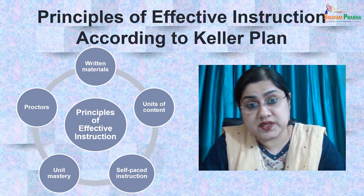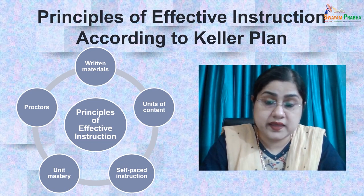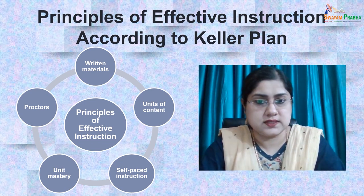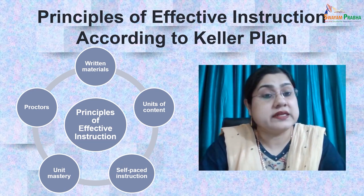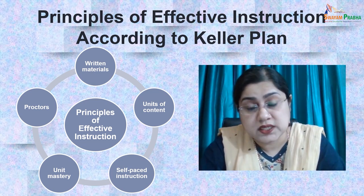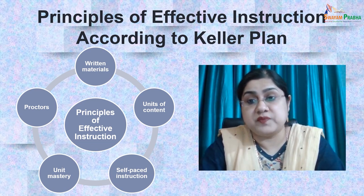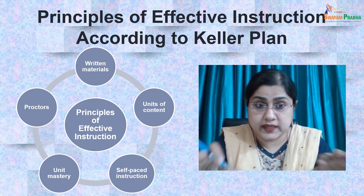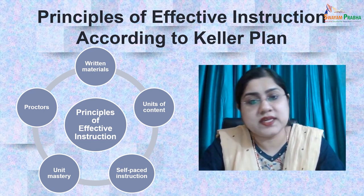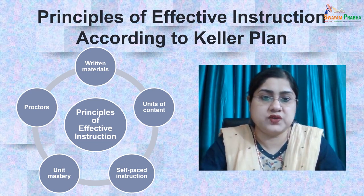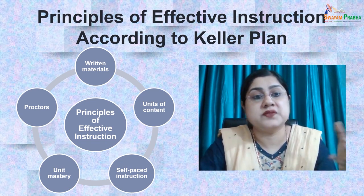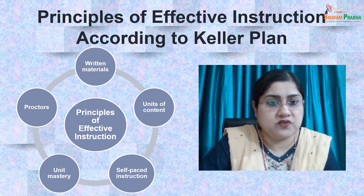According to the Keller plan, effective instruction should incorporate certain principles. There are five principles of the personalized system of instruction. The first principle is the principle of written materials — the primary presentation of new content should be through written text. At the time the Keller plan was developed, various media were available: lectures, movies, audio recordings, television, radio, and printed text. The paper-based text gave students the greatest freedom, as books were portable and could be read at a person's own pace.